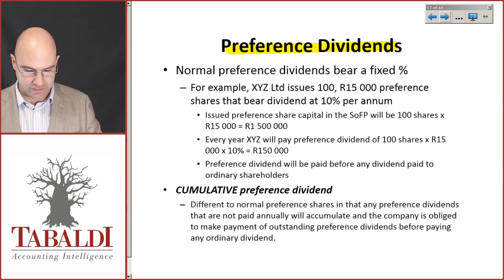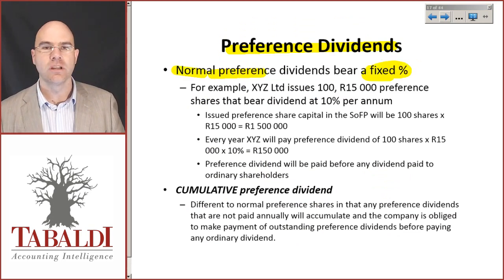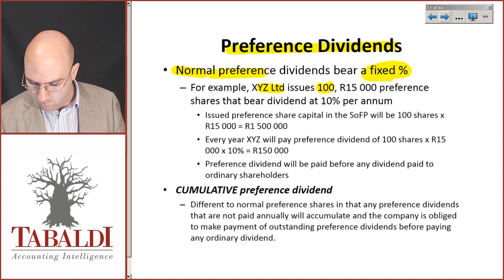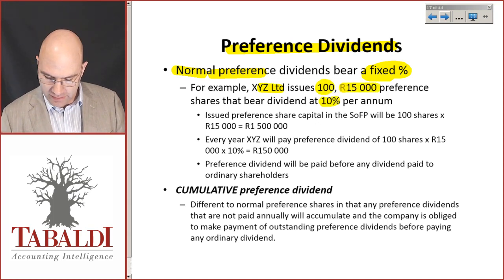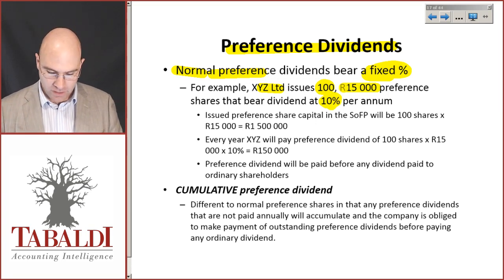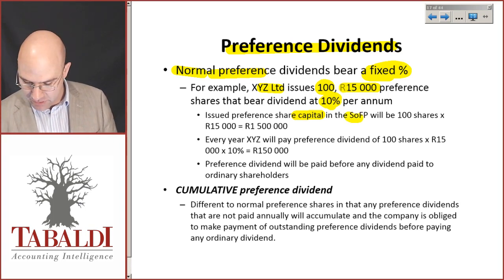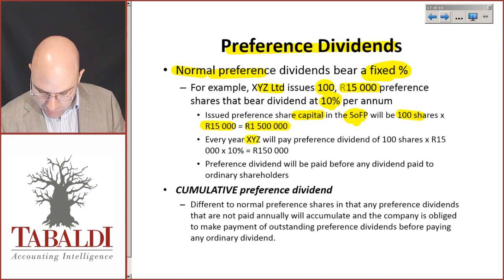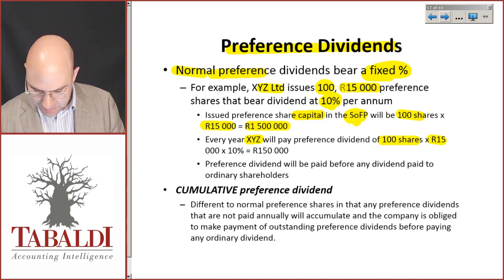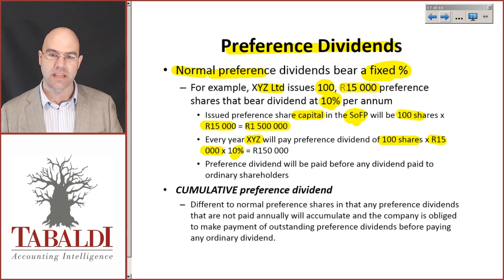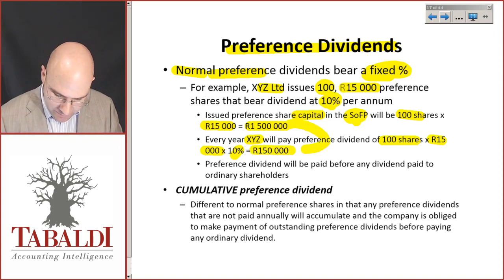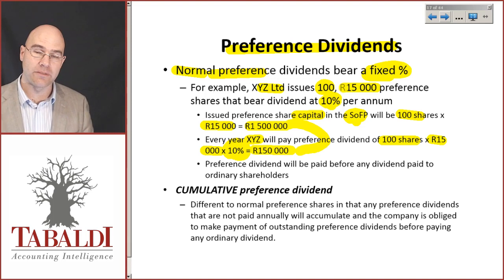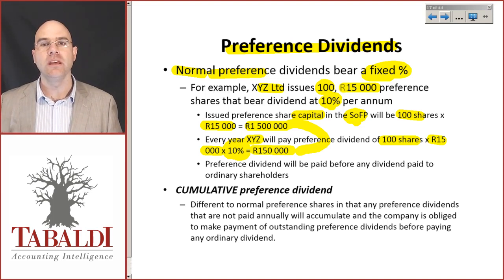Then we have the preference share and preference dividends. Normal preference dividends bear a fixed percentage — for example, a ten percent preference dividend share. XYZ issues 100 preference shares at R15,000 each bearing a dividend at ten percent per annum. The issued preference share capital on the statement of financial position will be 100 shares times R15,000 = R1.5 million. Every year XYZ will pay a preference dividend of R1.5 million times ten percent = R150,000. These preference dividends must be paid before any dividends can be paid to ordinary shareholders.